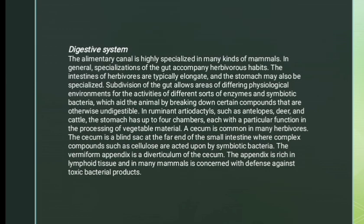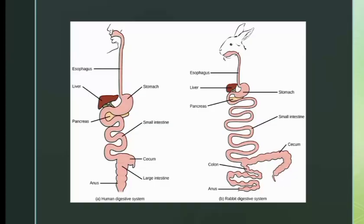Digestive System: The alimentary canal is highly specialized in many kinds of mammals. In general, specializations of the gut accompany herbivorous habits. The intestines of herbivores are typically elongate and the stomach may also be specialized. Here is a picture of the digestive system of a human and the digestive system of a rabbit.